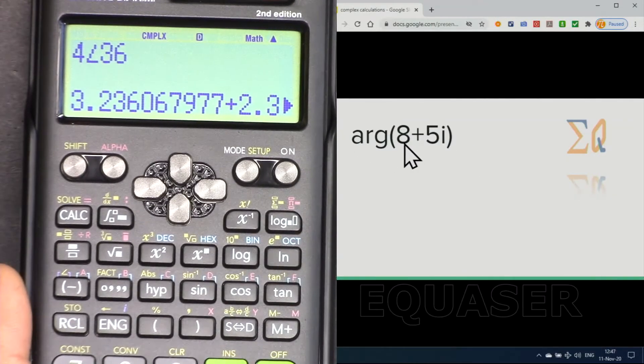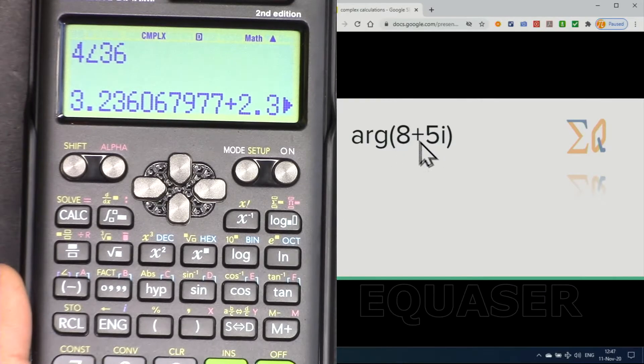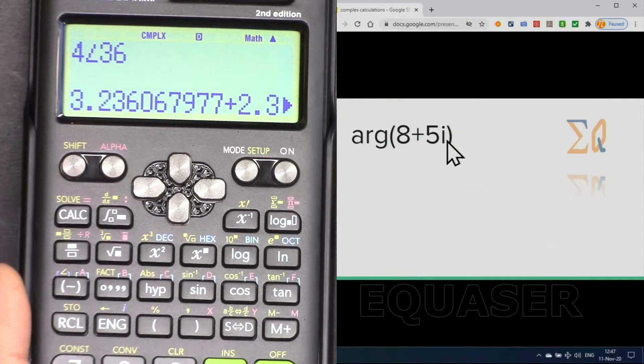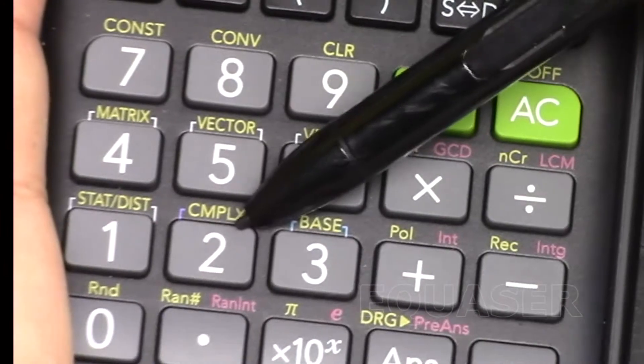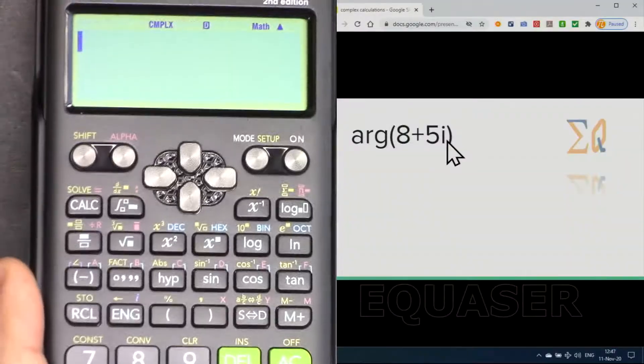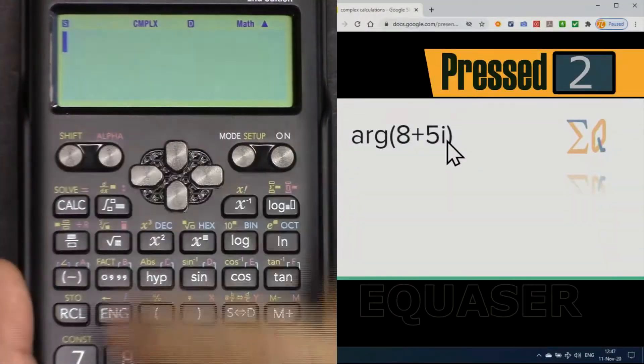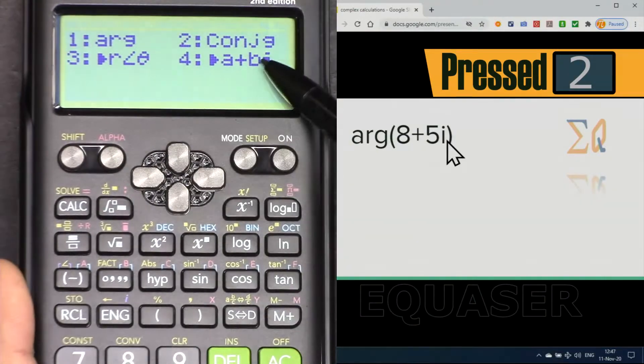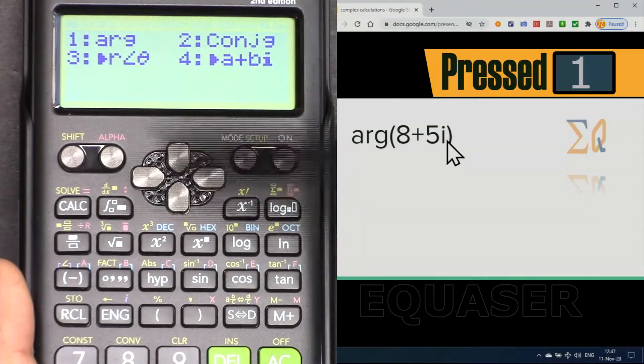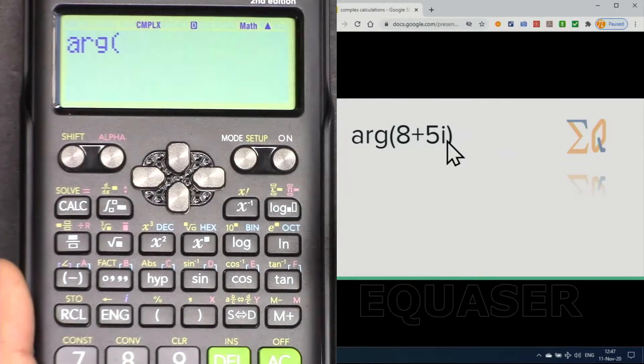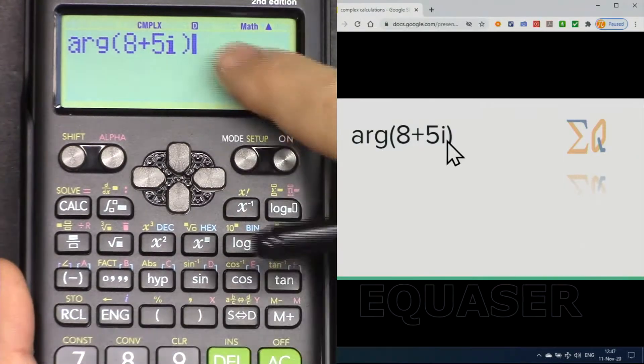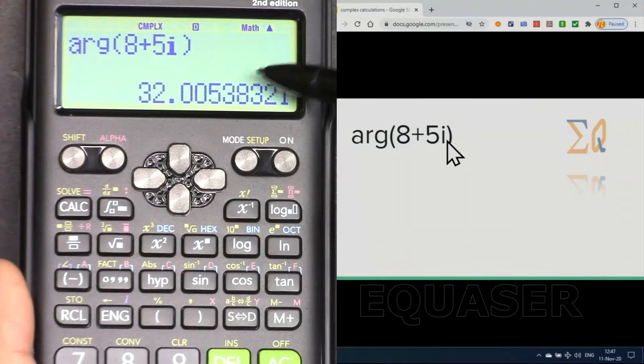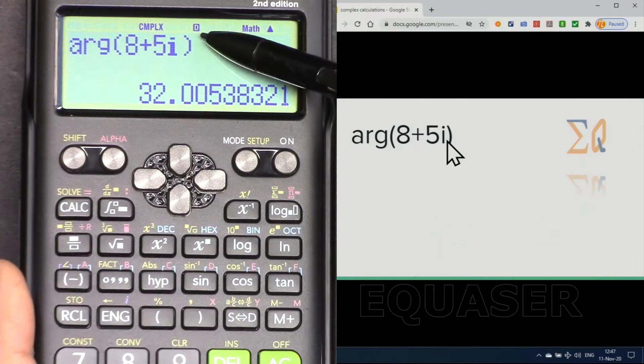Let's say you want to find argument of this value. When you do the argument, you are actually finding the angle for this value. To do that we use this complex button. I press shift and then 2, and here we have these operations. One is argument. You see argument, the parenthesis is open. 8 plus 5i, then close it, and you immediately get the angle in degree.